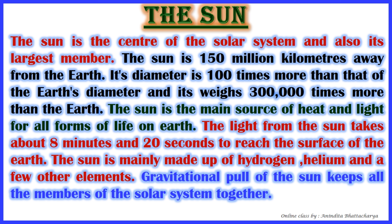The Sun is mainly made up of hydrogen, helium, and a few other elements. The gravitational pull of the Sun keeps all the members of the solar system together — the eight planets, asteroids, meteorites, and all other bodies stay bound together because of this gravitational force.